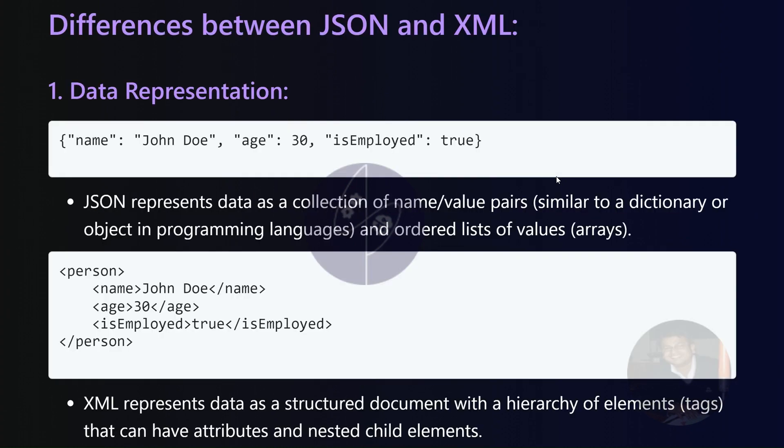Data representation. JSON encapsulates data in name/value pairs and ordered lists of values, resembling dictionaries or objects in programming languages. Conversely, XML structures data as a hierarchically organized document using elements and tags that can possess attributes and nested child elements.